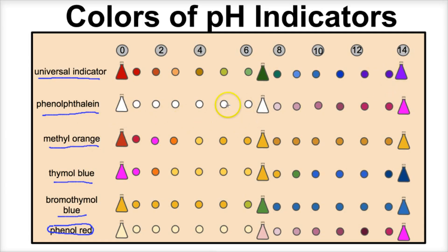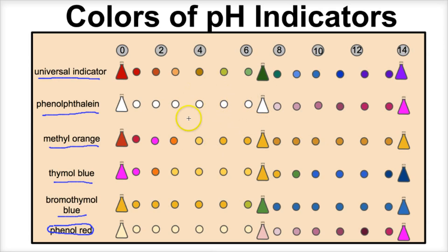Phenolphthalein, for example, is clear — transparent — at pHs of 0 to about 7, and once the solution becomes basic or alkaline, it turns from a light pink to a bright purple color at a pH of 14. If you pause this video, this chart will show you the more common types of indicators and the colors they change when placed in solutions with these different pH levels.